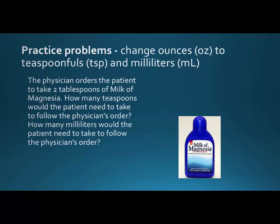Next problem: the physician orders the patient to take two tablespoonfuls of milk of magnesia. How many teaspoons would the patient need? How many mLs? We want to give them a conversion because maybe they don't have a tablespoon at home, and we don't want them using kitchen measures — that's not how you measure medicine accurately. We multiply two tablespoonfuls by three teaspoonfuls per tablespoonful to get six teaspoons. For mLs, one tablespoonful is 15 mLs, so two tablespoonfuls times 15 makes 30 mLs.